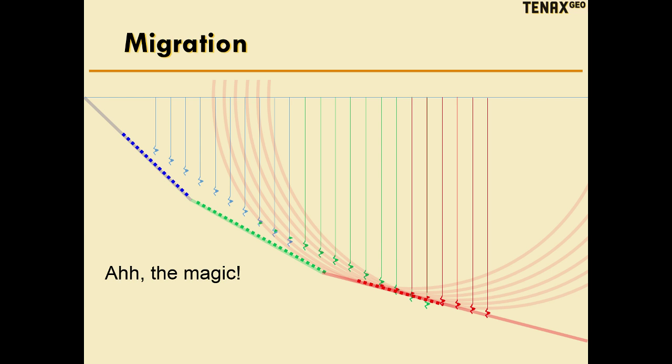But once that's known, seismic migration can automatically, in a digital fashion, essentially correct for dip and velocity effects to put the geology back in its correct location.